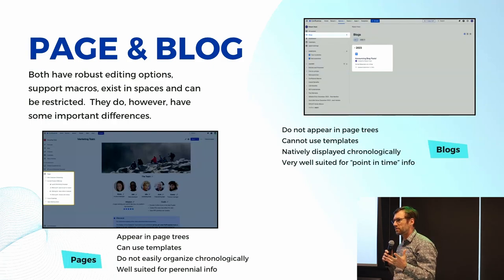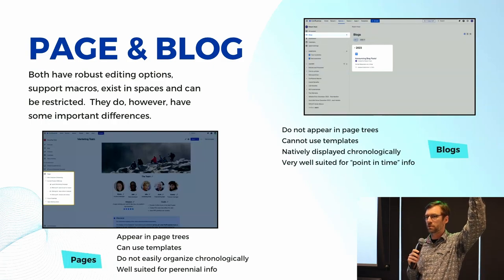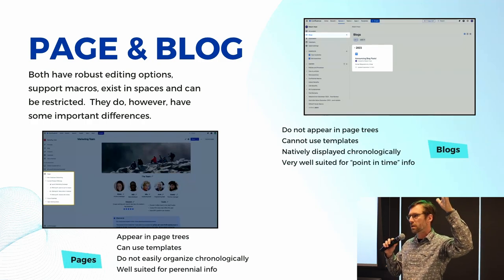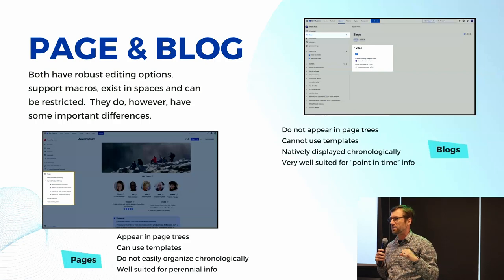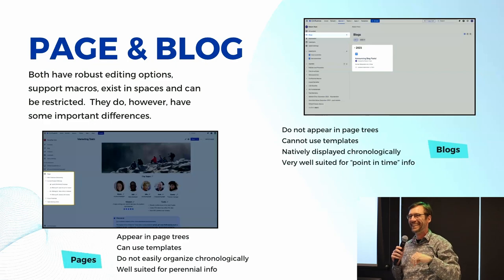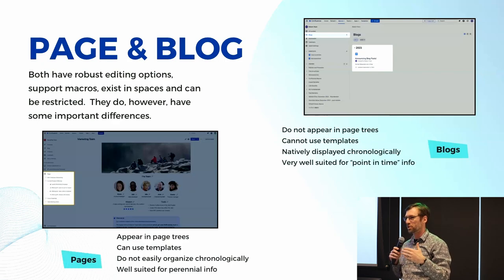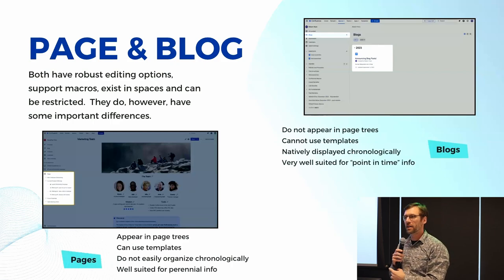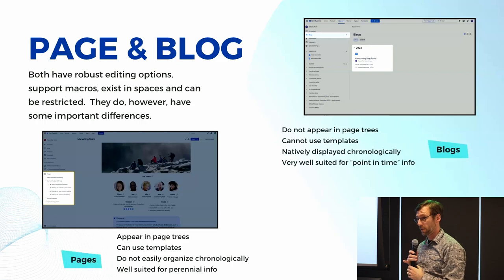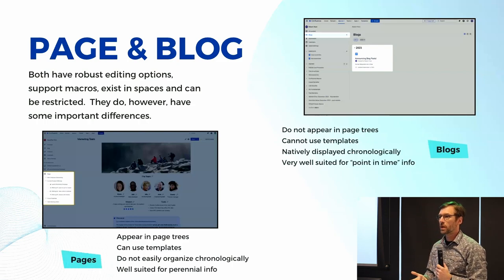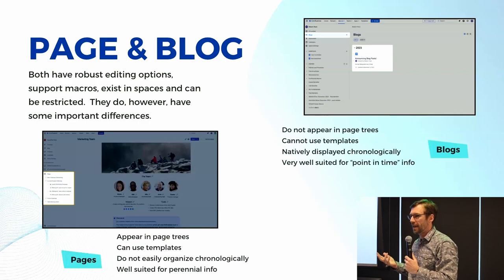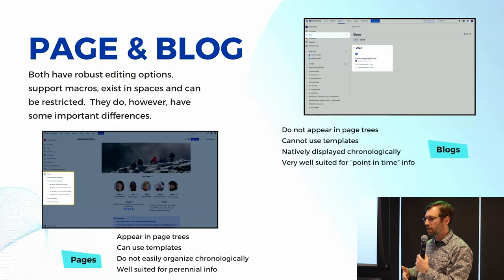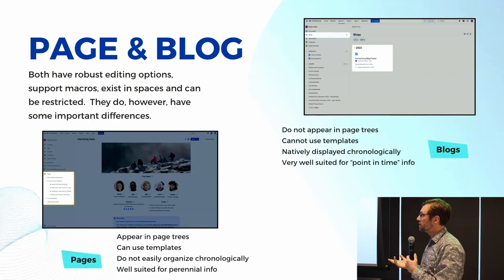Pages and blogs — both share a lot of similarities: rich content editing, things like macros, you can share them, link to them, and restrict them. Where they start to get different is where they appear. Pages show up on the left side of my content tree. I can organize them in a parent-child relationship. In the HR example, I might have a page called 'Policies' and under that, all of the policies. In an engineering space, I might have a page called 'Documentation,' a subpage called 'API Documentation,' and then all the API stuff under that.